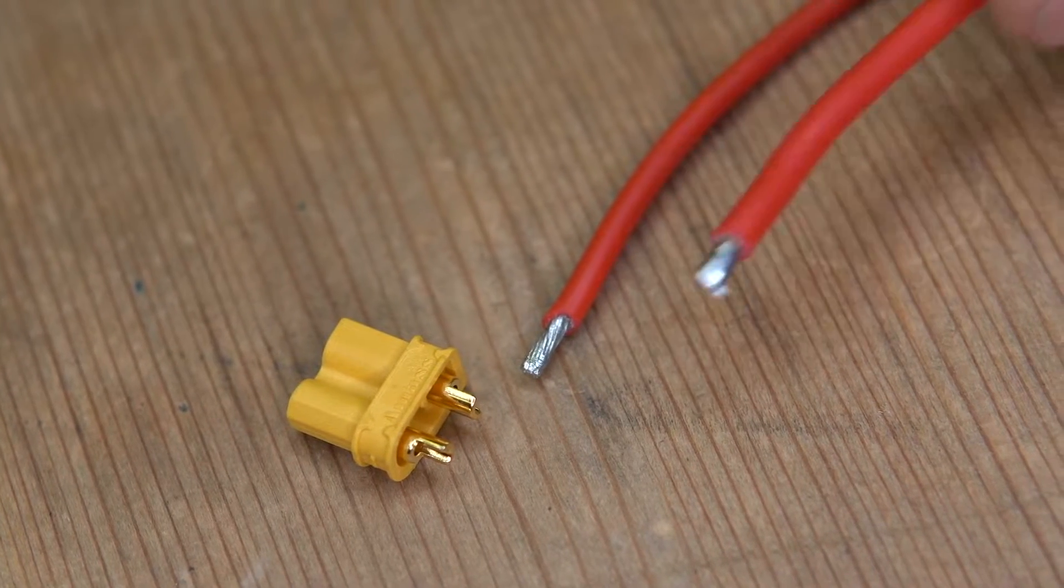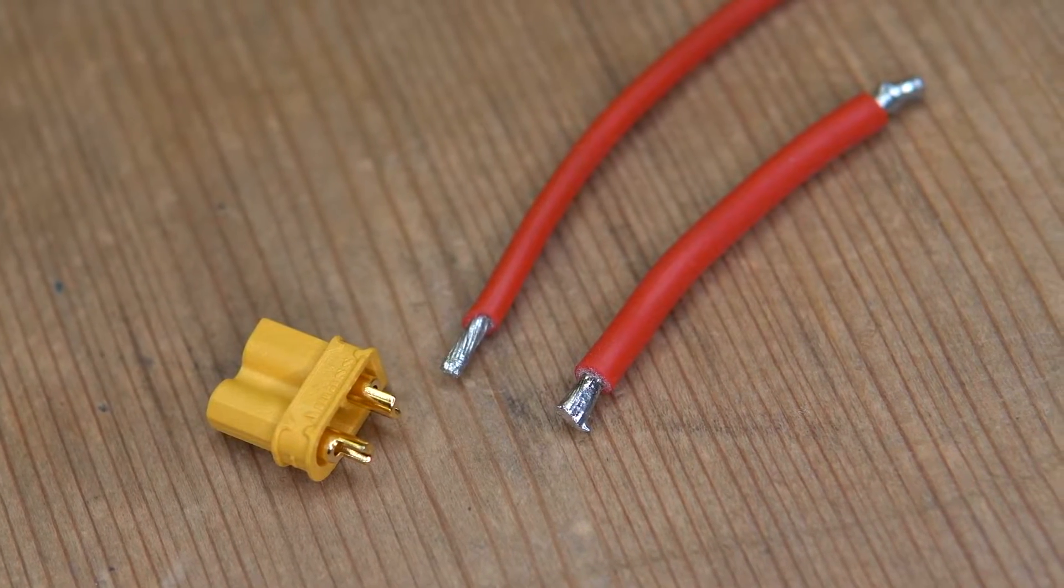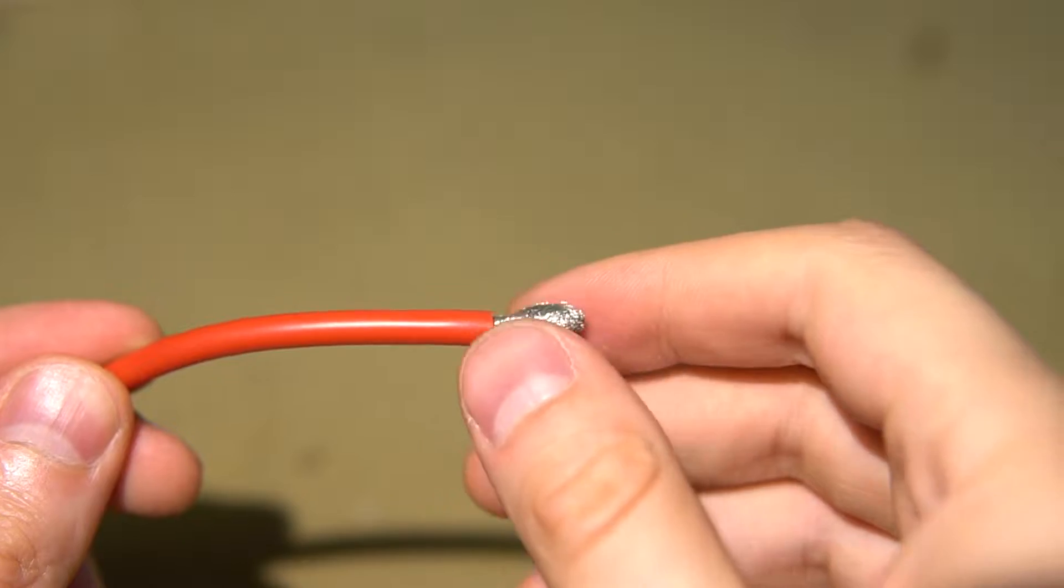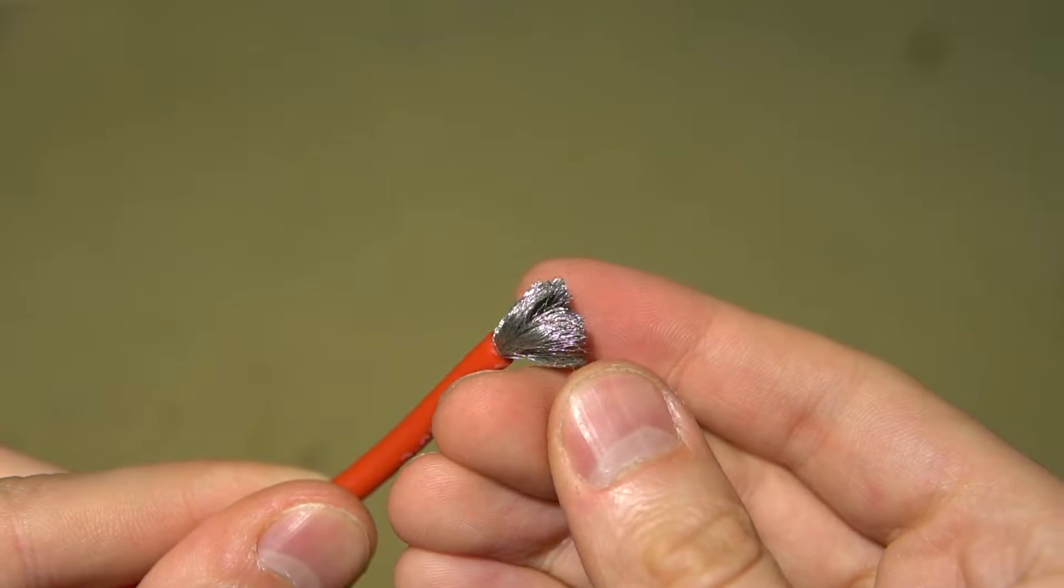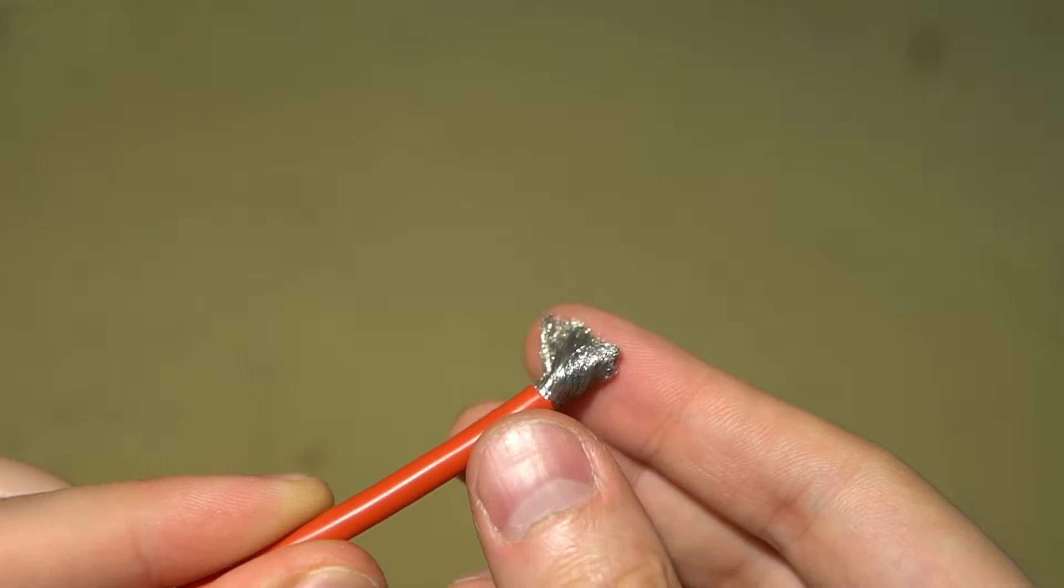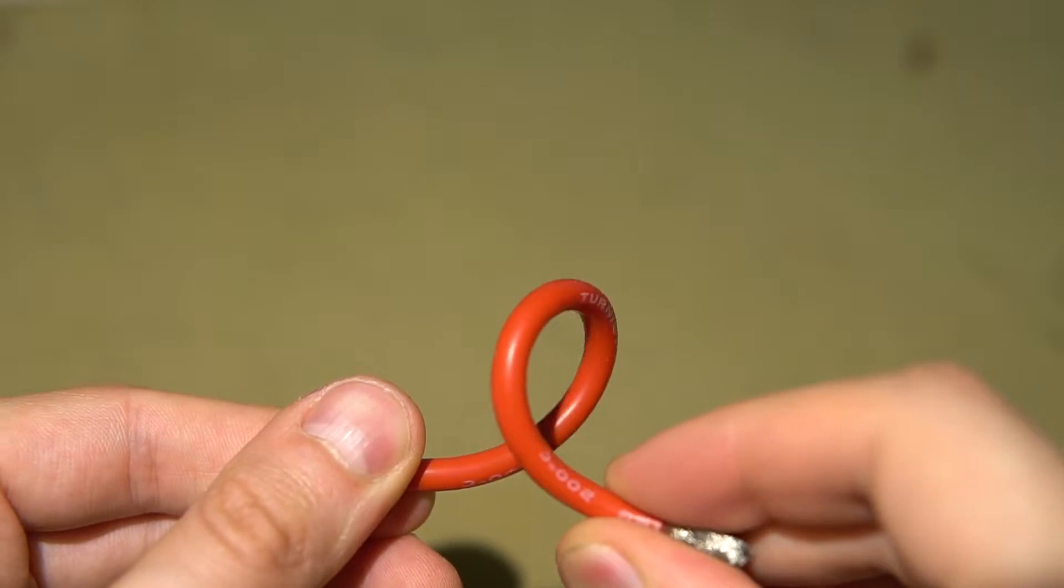In this video we'll be focusing on silicon wire as we strongly recommend using it for drones. Thanks to its construction out of tiny tinned copper strands and soft silicon rubber, these wires are very flexible and therefore handle vibrations very well.